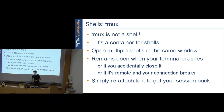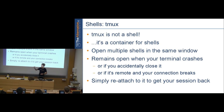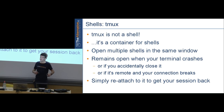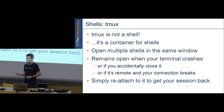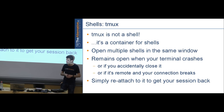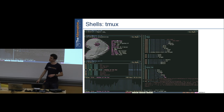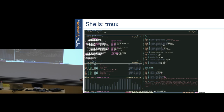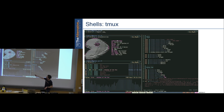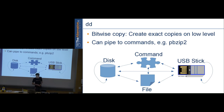tmux is not a shell — it's a container for shells. It lets you display multiple shells in one console window. When working on a remote machine, you don't need two separate connections for two windows. Also, if your connection crashes, tmux stays alive and keeps running. You can reattach with `tmux -a`. It's a fail-safe console wrapper and is highly configurable.